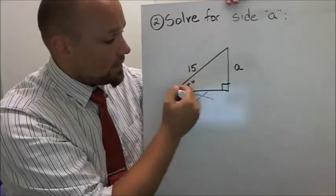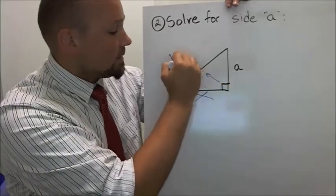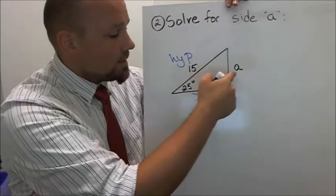So this side right here, you can see that the right angle points to it, which means that this is the hypotenuse.